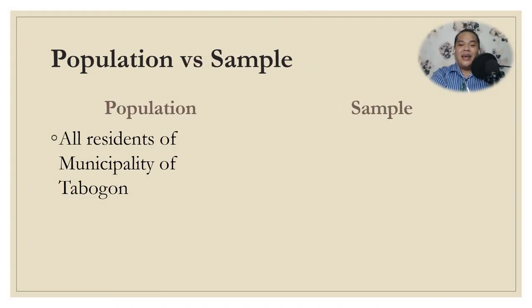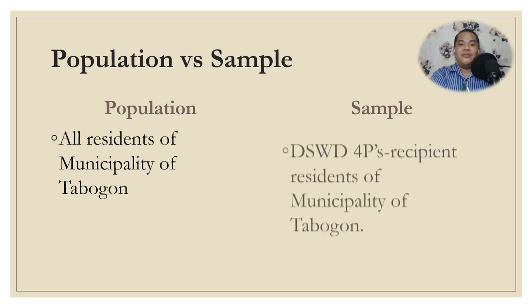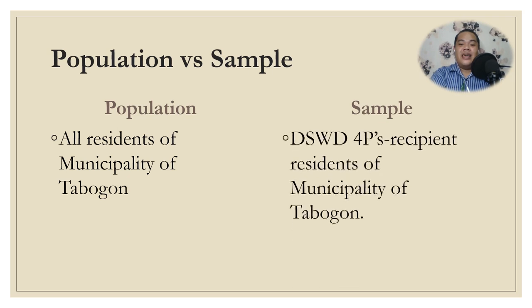Last example: for the population, all residents of the municipality of Tabugon; for the sample, DSWD 4Ps recipient residents of the municipality of Tabugon. These 4Ps recipient residents are just a subset of all residents.